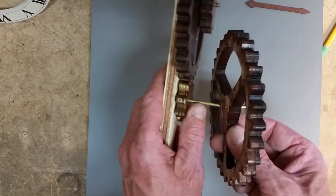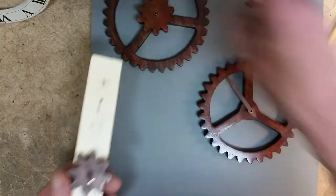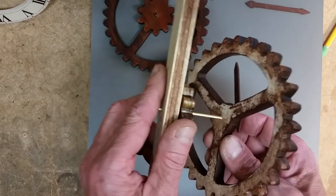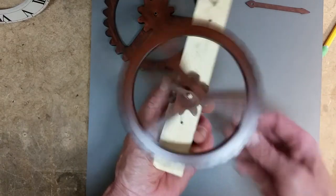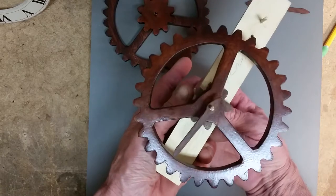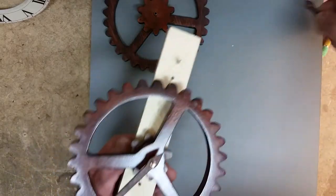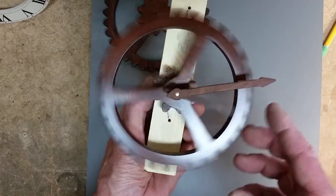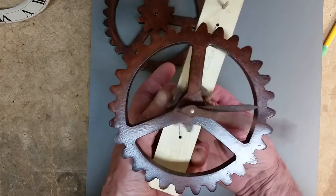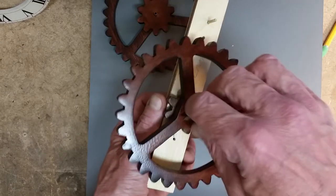If I slip this over this 1/8 inch shaft, you can see that it just spins freely on there independent of the gear behind it. If I were to put the minute hand back on here, you can see that the minute hand and the hour hand are completely separate from each other.